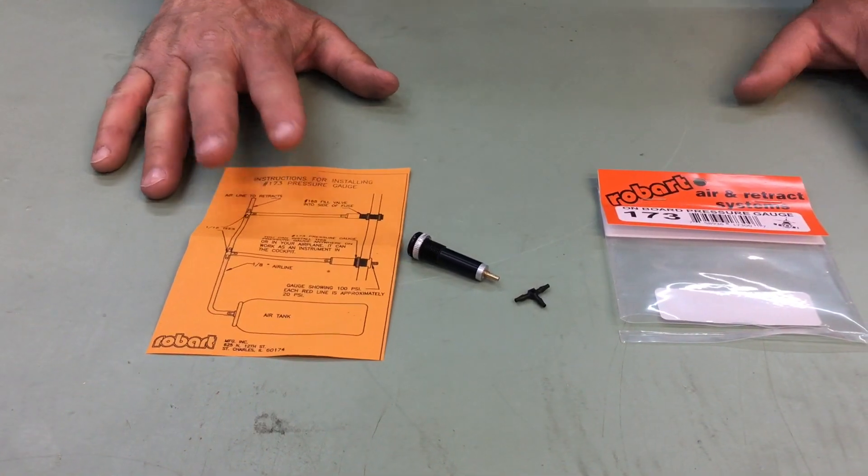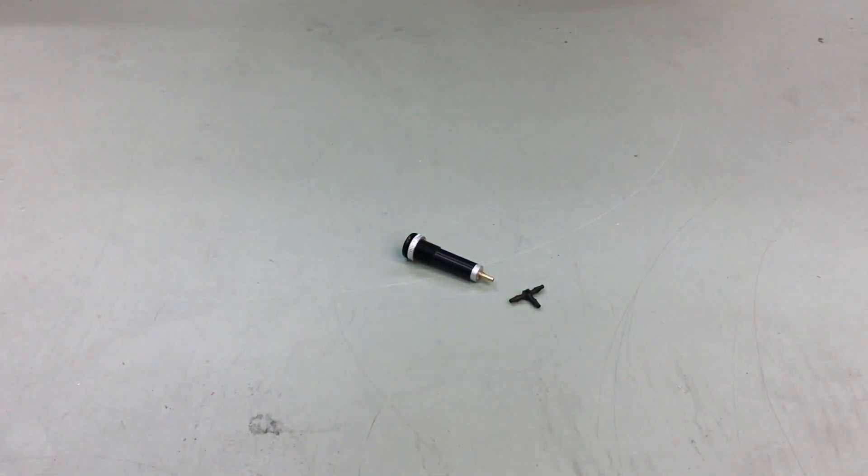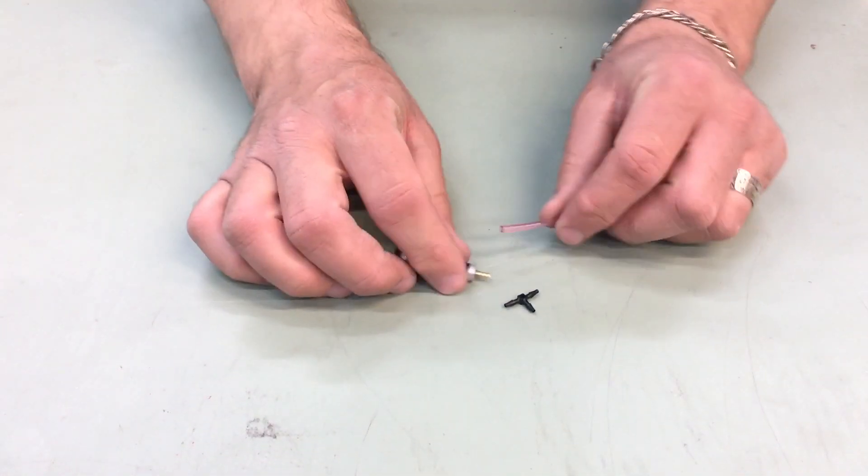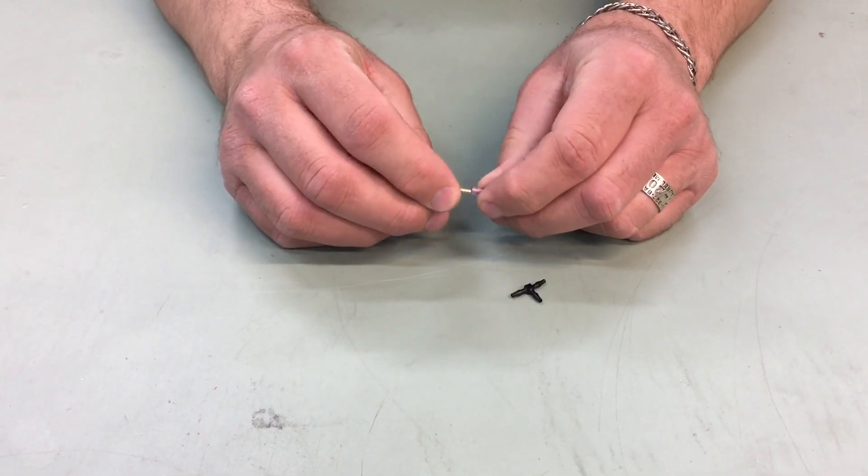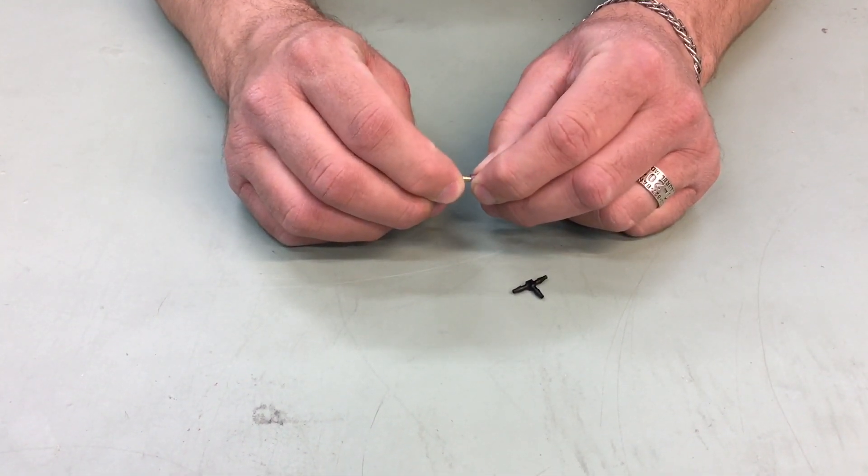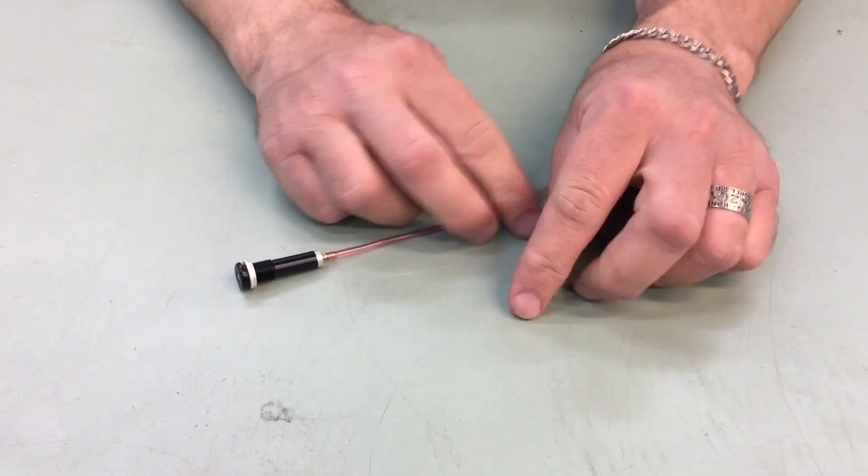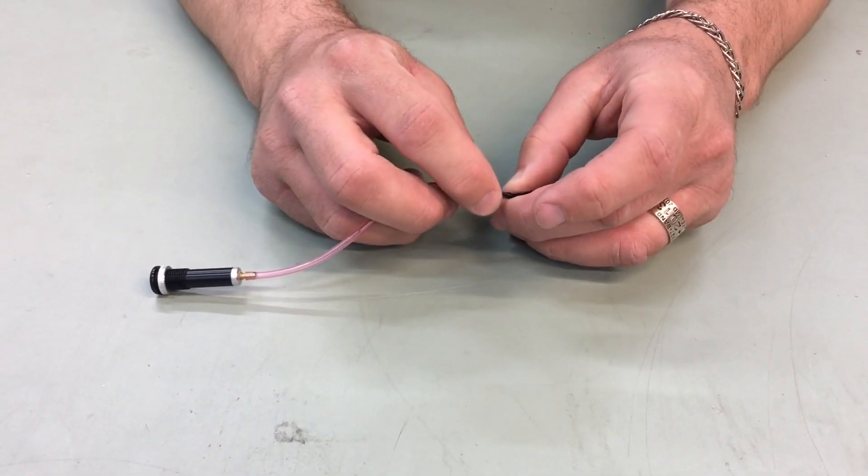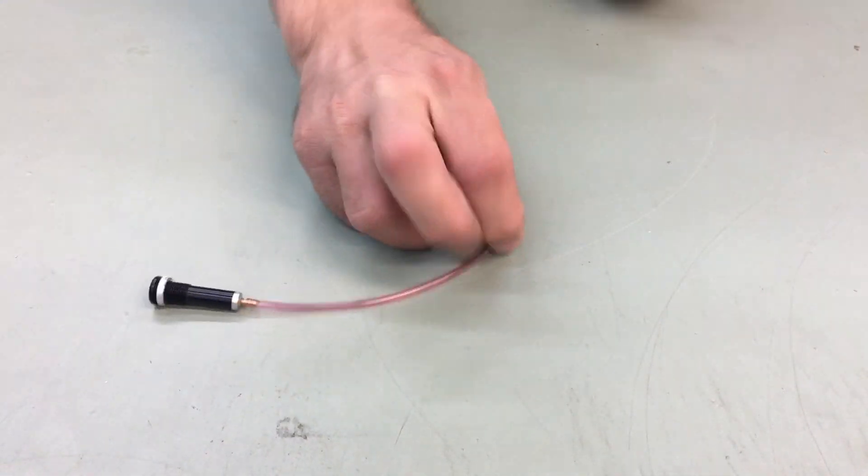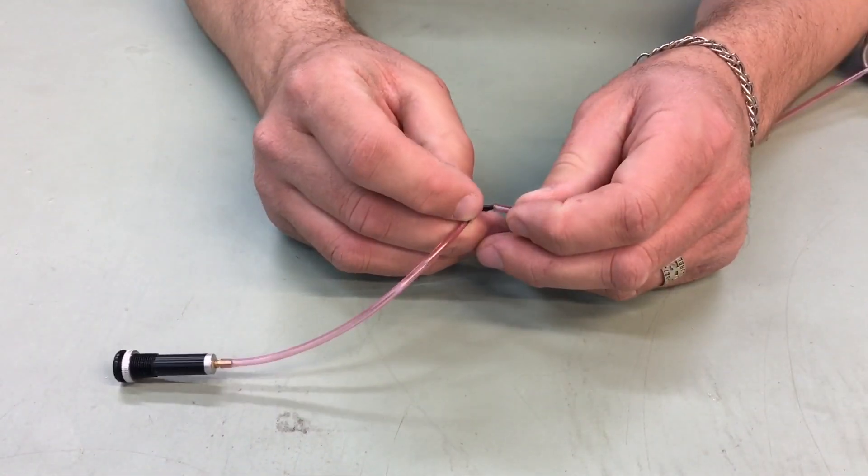So let's just show this real quick. I'll do a quick setup. Air line into the pressure gauge, air line into the T, air line to the tank.